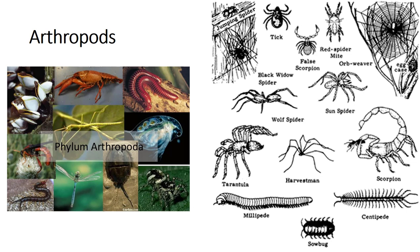Arthropods are organisms with an external skeleton and jointed body parts. The arthropod group includes six classes with members that are significant pests as well as several minor classes. Insects are by far the most abundant and diversified class of arthropods with 31 different orders. Spiders, ticks, and mites belong to the next largest class, the arachnids. Other major arthropod classes are the crustaceans, including sowbugs and pillbugs, the centipedes, and the millipedes.